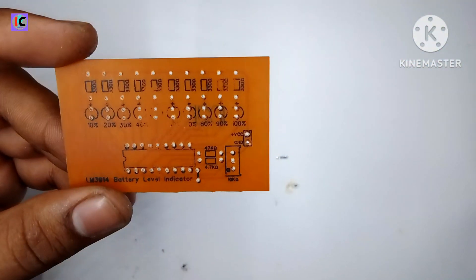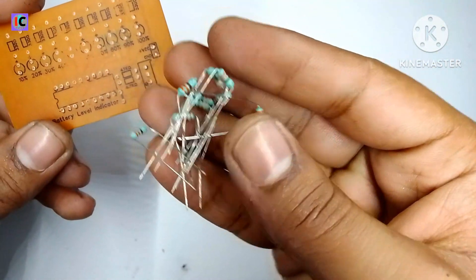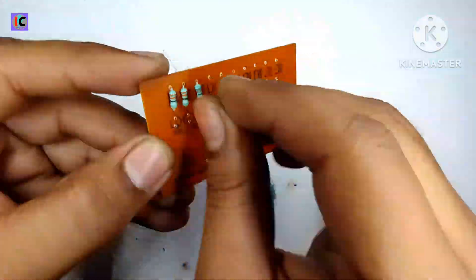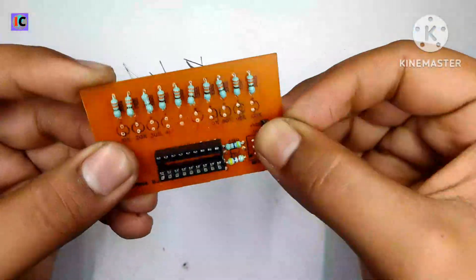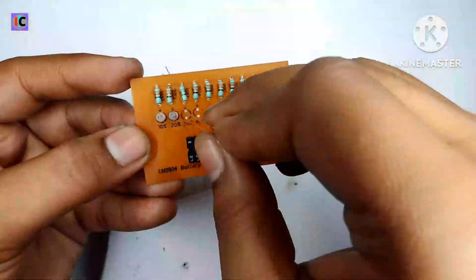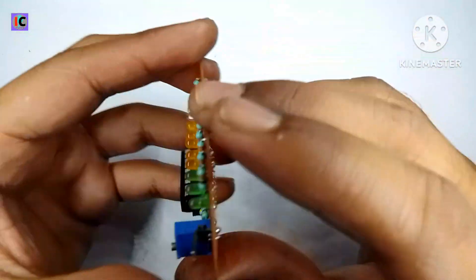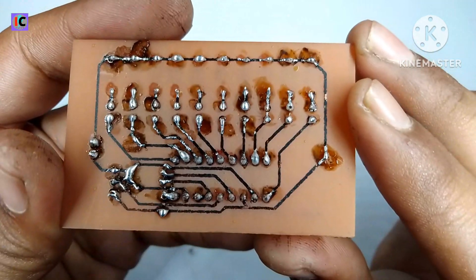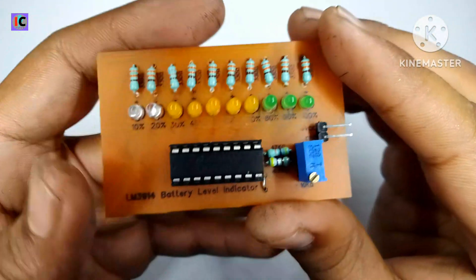After this, the PCB is ready for the components. I completed my PCB with all the components including the resistors, LED, and IC bases. This is basically a battery level indicator PCB, and the PCB is now done.